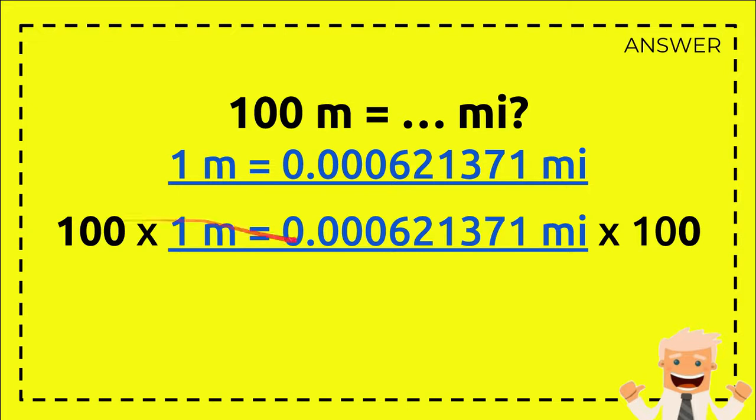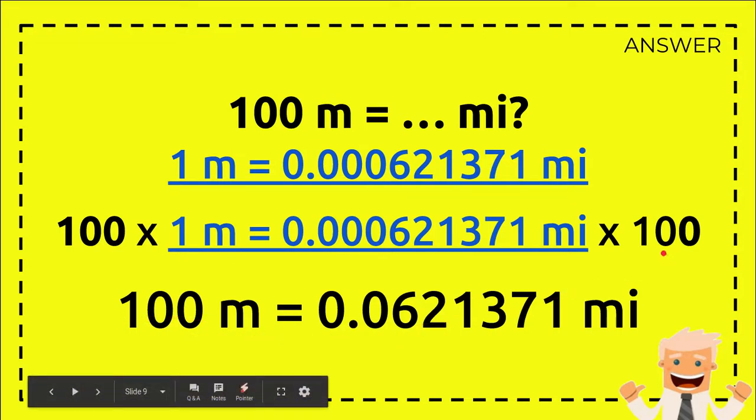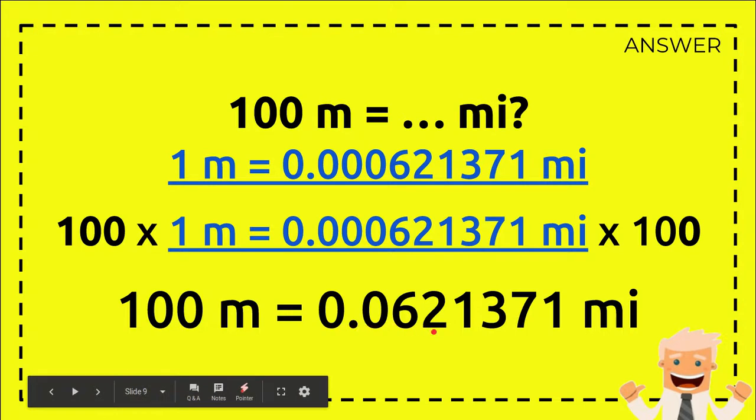All right, so 100 times 1 meter equals 100 - exactly just like the question, right? And then 100 times this number equals 0.0621371 miles. Okay, that's very easy.